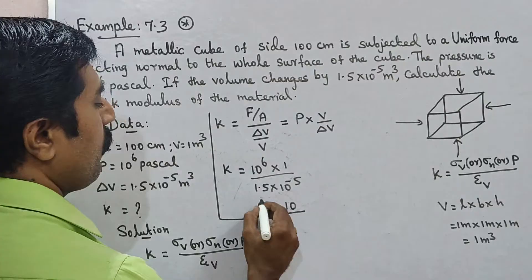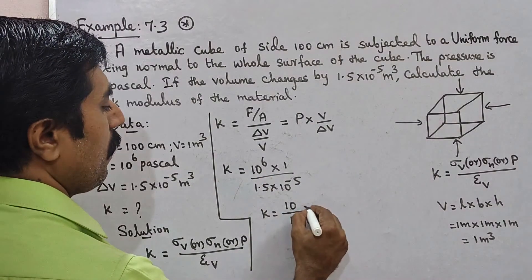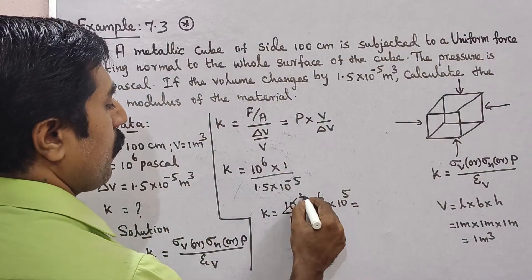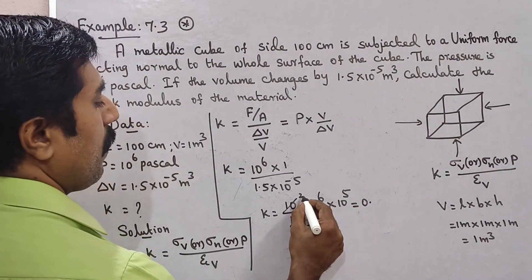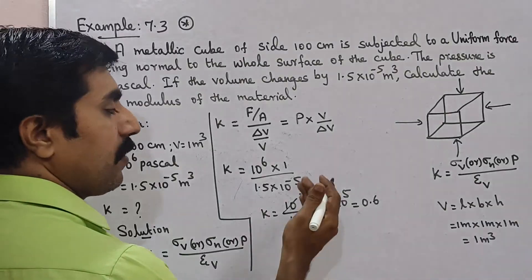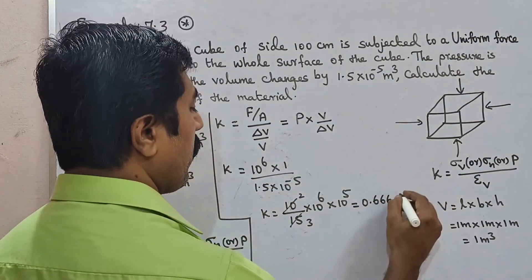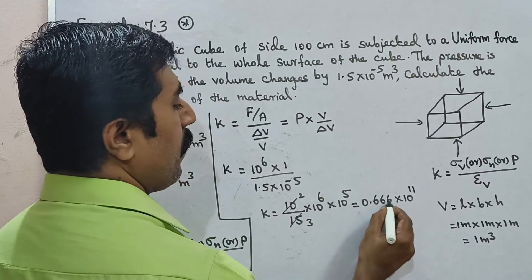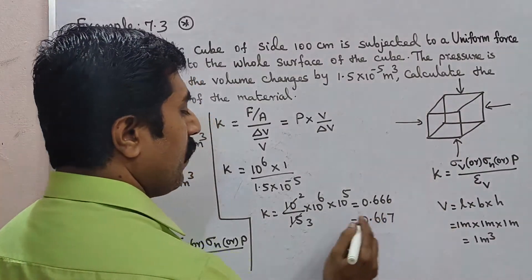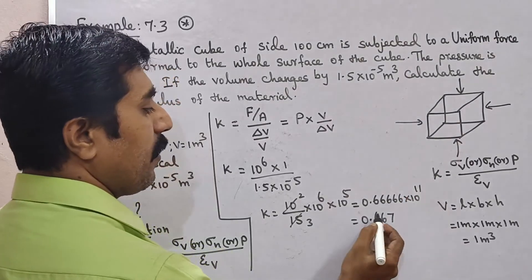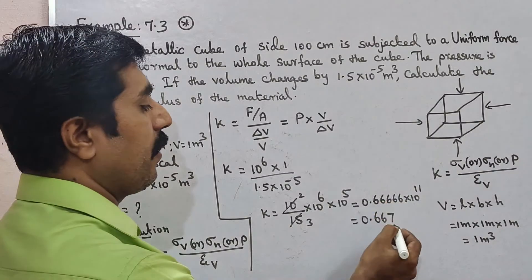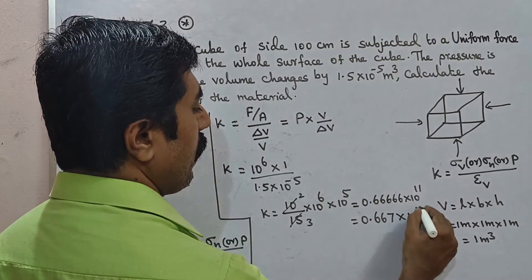1 by 1.5 into 10 power minus 5 plus 5, so which is equal to 2 times, 2 by 3. 0 point, 20 by 3, 6 times, 6, 3 is 18, remaining 2, 3 plus 0 add 20, so 6.67, 0 point, into 10 power 6 plus 5, 11. This round is equal to 0 point 667 into 10 power 11.